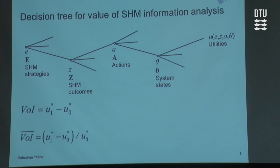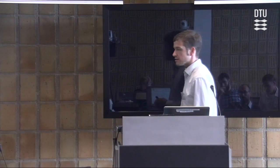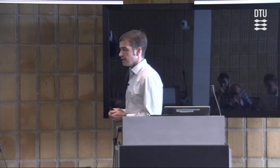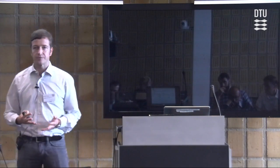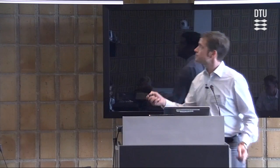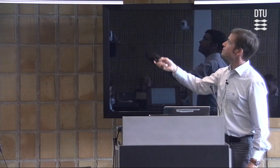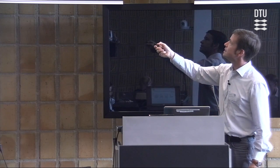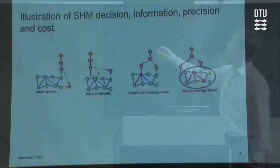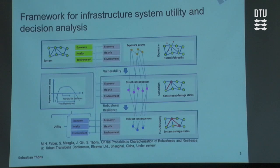We have both a visualization of the framework and this decision tree. So where is the connection? The connection is the system states — this branch here in the decision tree corresponds to the system states found in the framework as well.